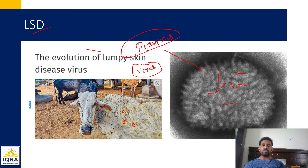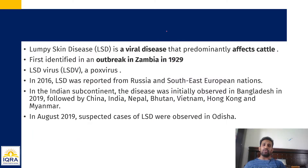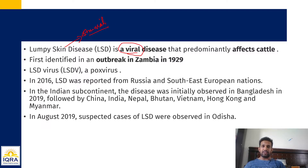Examination point of view ke liye yaad rakhna hai: lump skin disease cattle ko effect karti hai — animals ko, not humans or plants. Yeh disease viral hai — virus se hoti hai. Pehli baar Zambia mein outbreak hua tha. Uske baad 2016 mein Russia mein aaya. Ab China, India, Nepal, Bhutan, Vietnam mein bhi dikha hai — they have reported the same disease on the cattle.